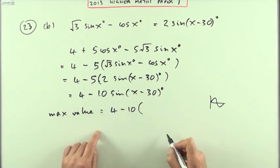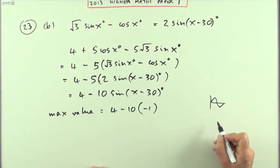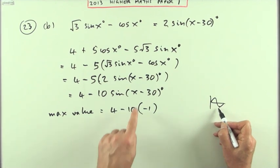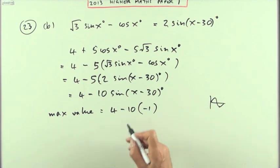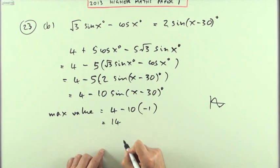Well it's going to reach its maximum when the sine's at negative 1. It's going to be 4 minus 10 times when the sine's at its minimum, which is negative 1. That will happen when the angle is 270, when this angle x minus 30 is 270, but it doesn't ask for that part. Just says what's the maximum value. Well it'll be 4 plus 10 which is 14.